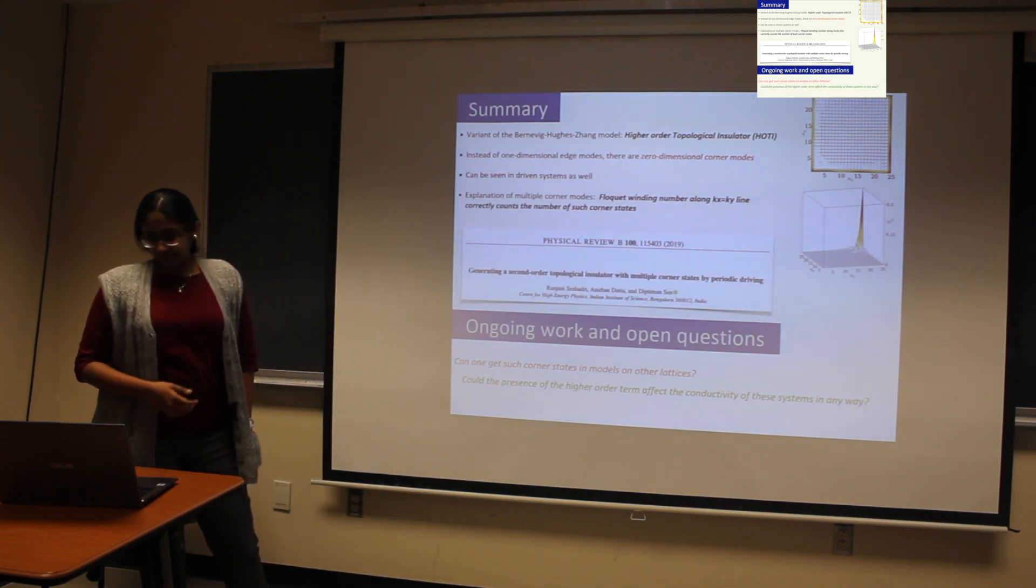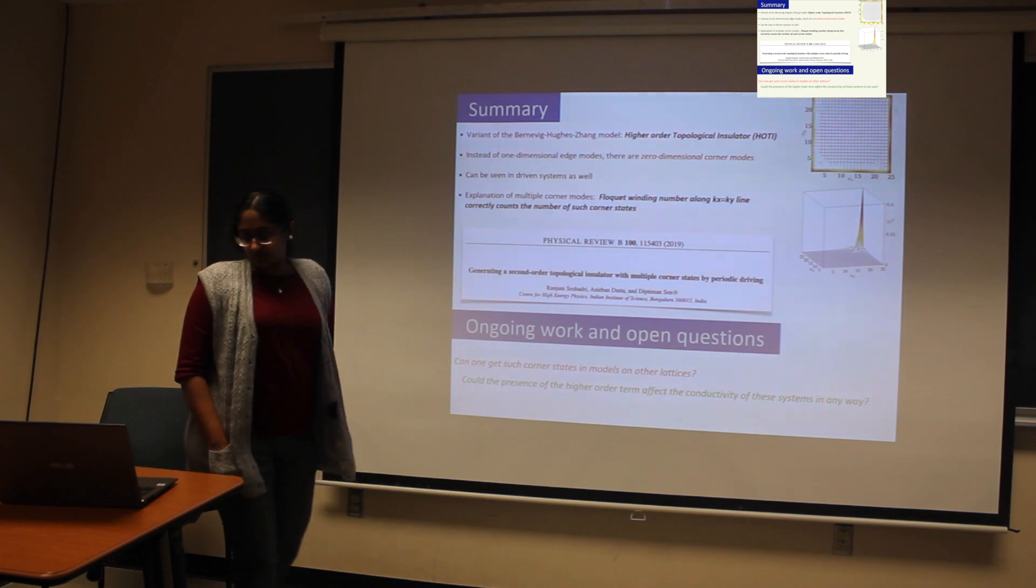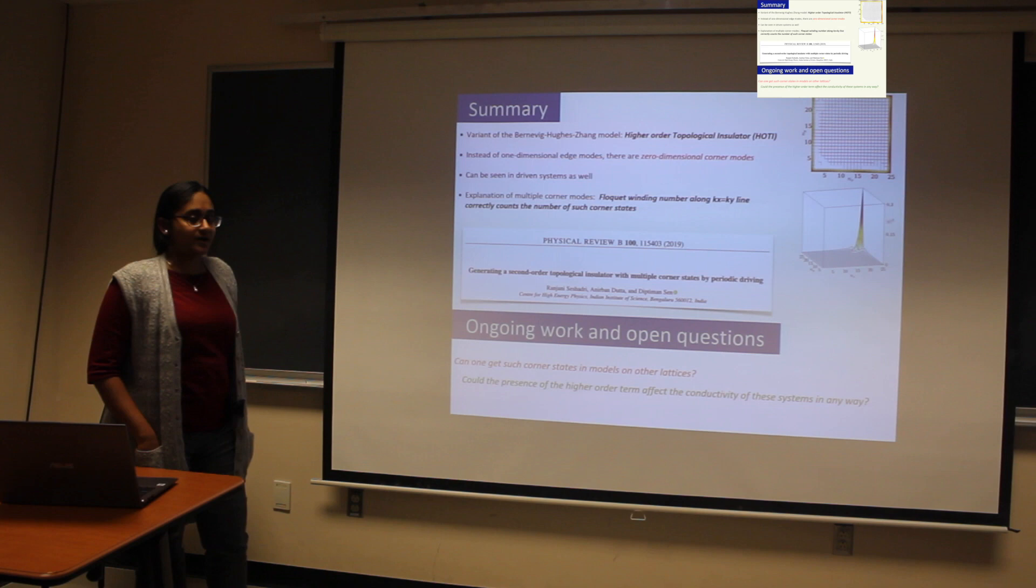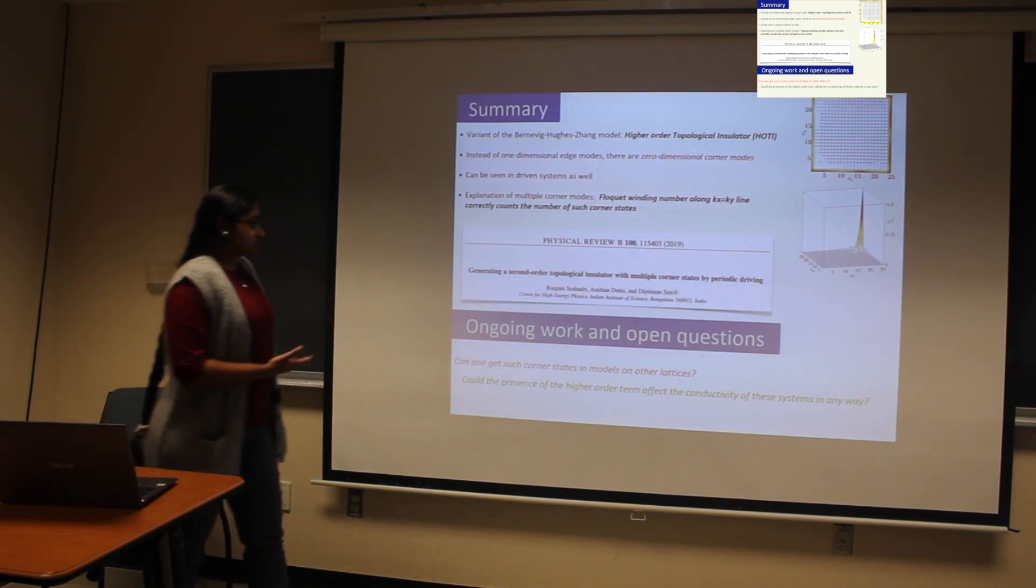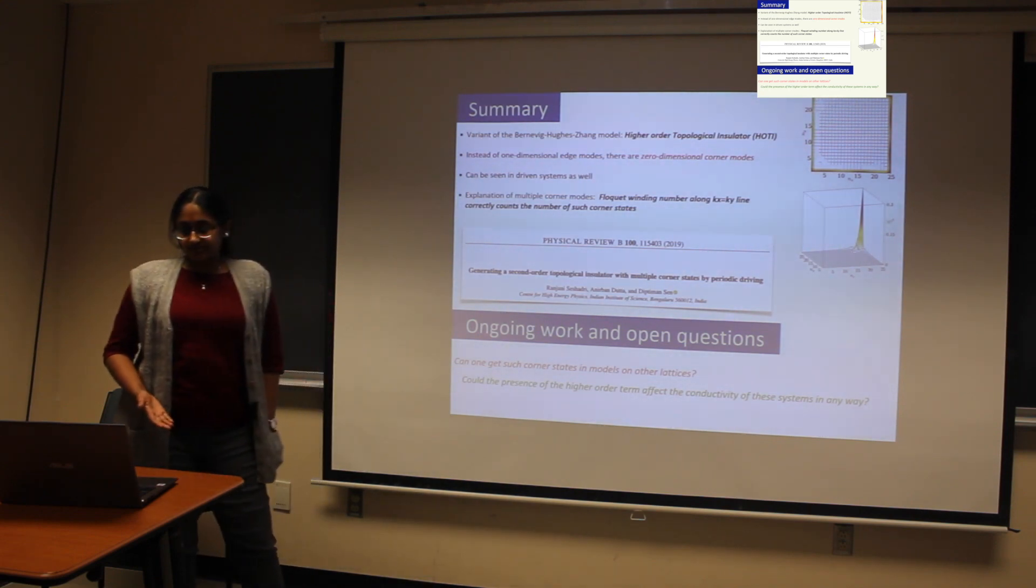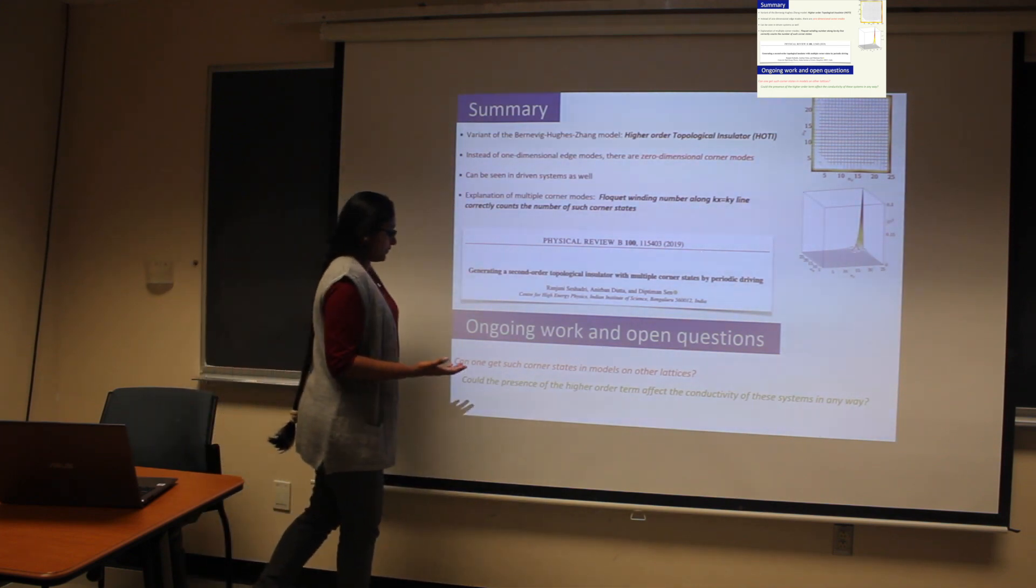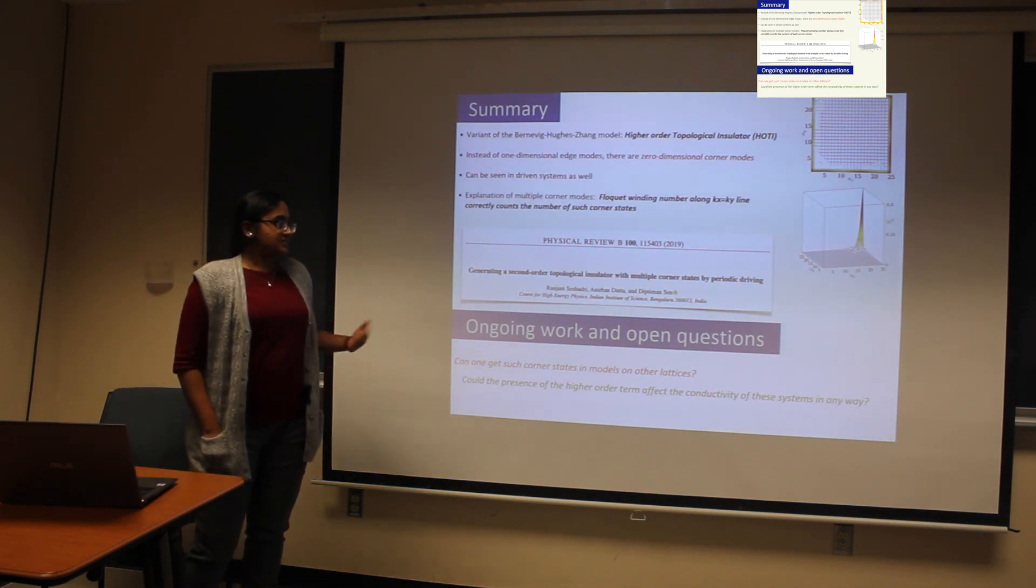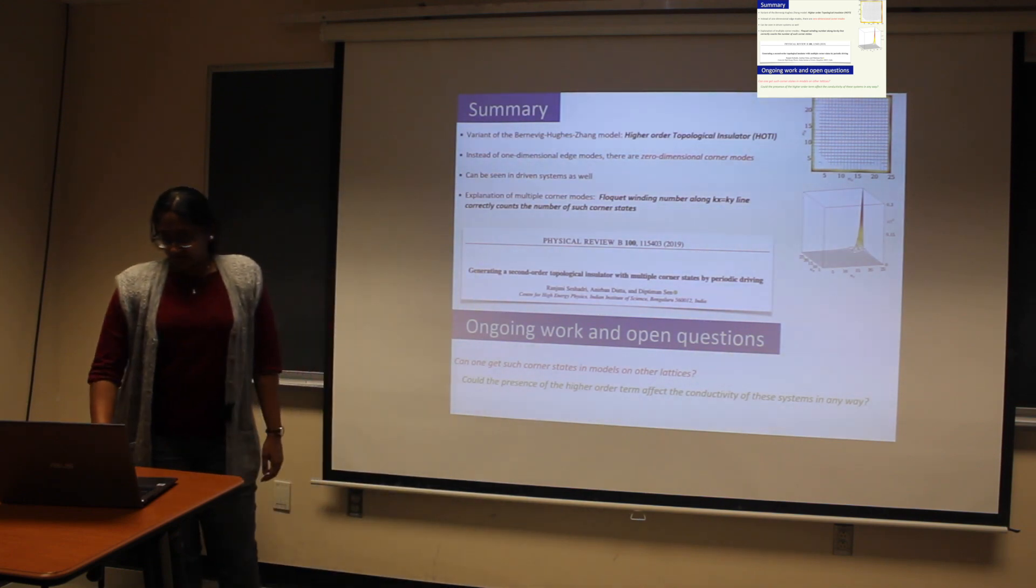This topological invariant can correctly count the number of such corner modes. So there are some open questions which we are trying to address. One of them being, is it possible to get such modes in other lattices? For example, here we looked at a square lattice on which the BHZ model is valid. Is it possible to get such kind of modes in other lattices, say for example a hexagonal lattice? Also, is it possible that the presence of these higher order terms might affect the conductivity of the systems in any way? These are some of the questions that we are trying to address. Thank you.